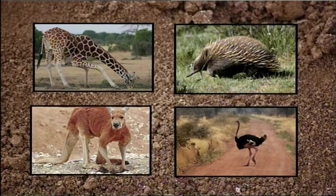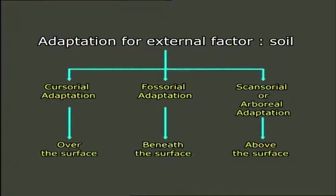Now let us get more information about the external factors to which living organisms show their adaptations. The most important external environmental factor is soil. Some organisms are adapted to live entirely in soil. Lull in 1952 classified structural adaptations into different types based on the external factor soil, which include cursorial adaptation, where cursorial animals show adaptations for living over the hard surface of the earth.